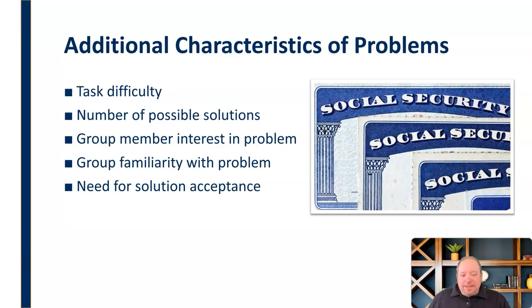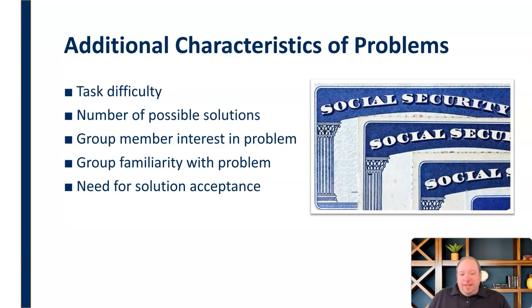Same thing with Social Security—we can apply to that type of issue, or even things like pet overpopulation and the shelter situation for pets. All of these, we can see that there are additional characteristics that make it even more challenging to solve these things.